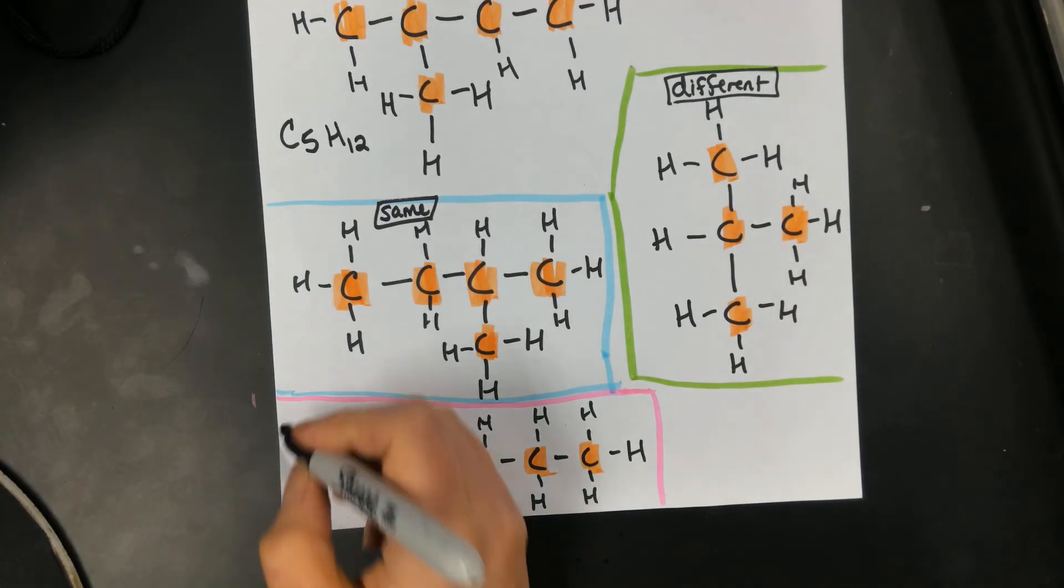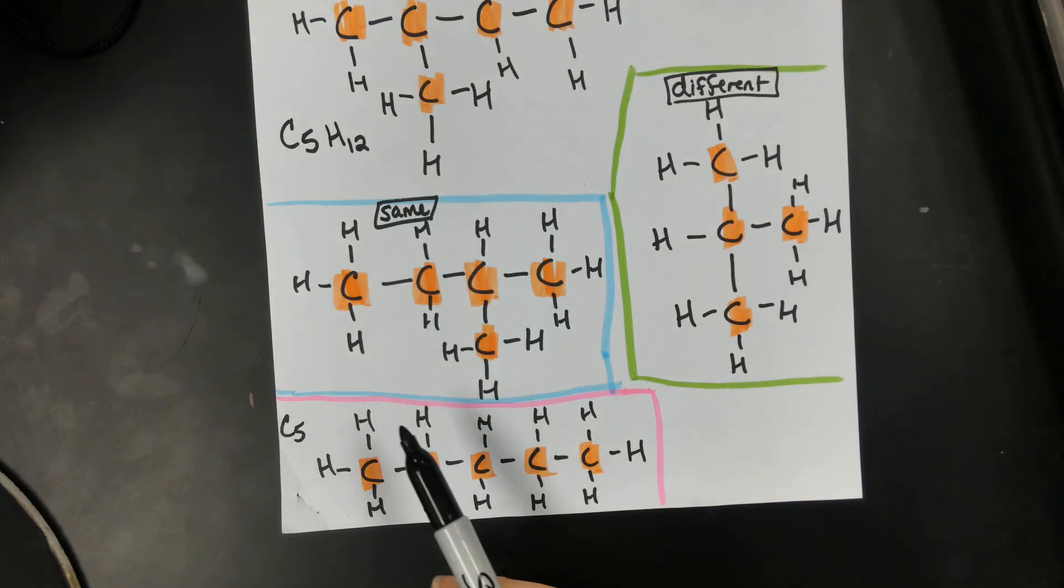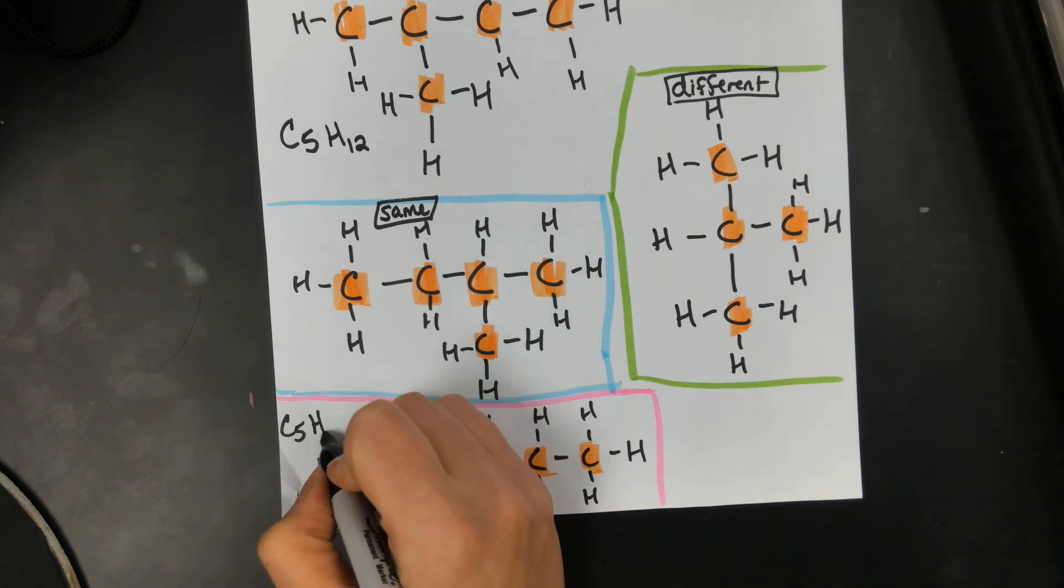So let's look at the formula and make sure that the formula is the same. The formula down here is C5. And how many H's? 1, 2, 3, 4, 5, 6, 7, 8, 9, 10, 11, 12. C5H12.